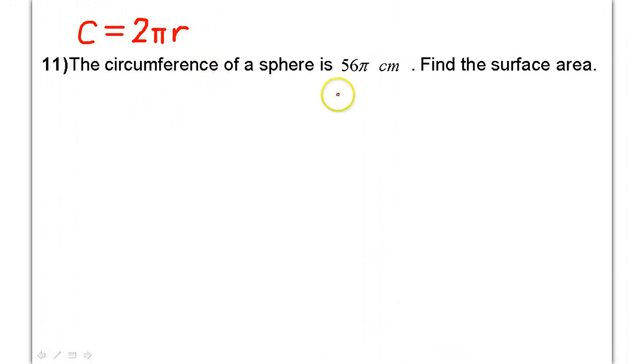Okay, so the circumference is 2πr. We are given 56π for that circumference. So, I can take that 56π and substitute it in for C.